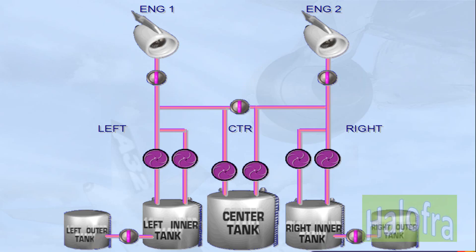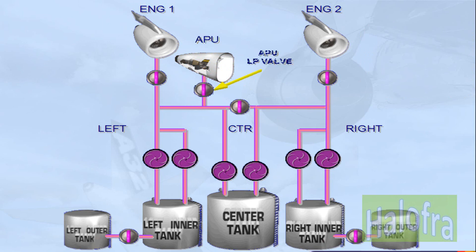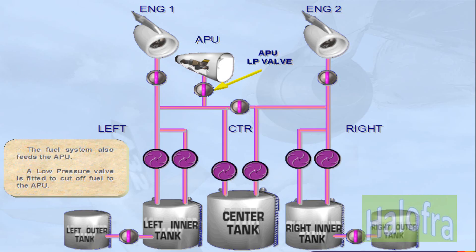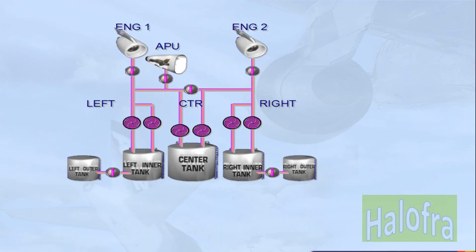The fuel system also feeds the APU. A low pressure valve is fitted to cut off fuel to the APU. This represents the basic fuel system. We will now see how this information is presented to the pilots in the cockpit.